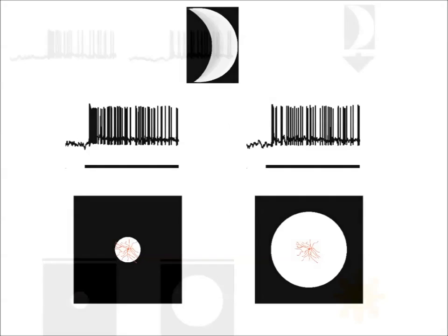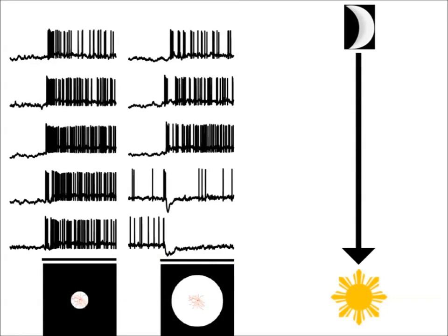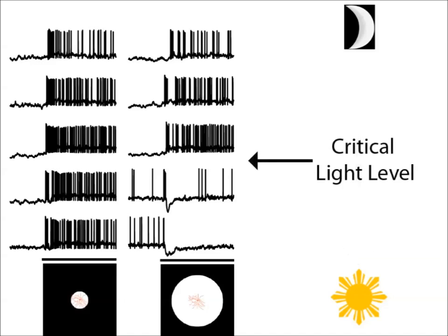By sliding through the light levels from starlight to daylight, we observed that the inhibitory surround was activated abruptly and reversibly at a critical light level like a switch. We determined this light level to be the threshold of cones.